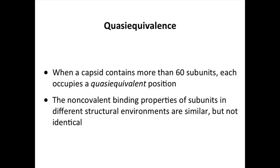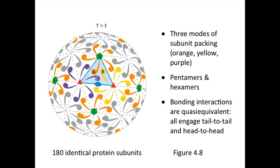The problem is, when you start adding additional subunits in, they're not all the same interactions anymore. So Casper and Klug modified their theory to say they interact in a quasi-equivalent fashion. They're similar, but not identical. Anytime you have more than 60 subunits, you run into this problem that all the interactions are not going to be the same anymore. So you have different structural environments, similar interactions, but not identical. So that's what quasi-equivalence means.